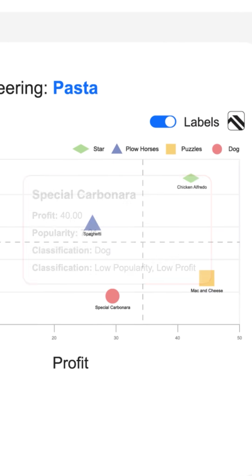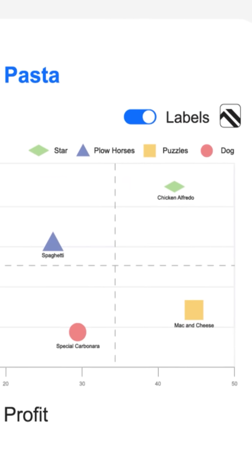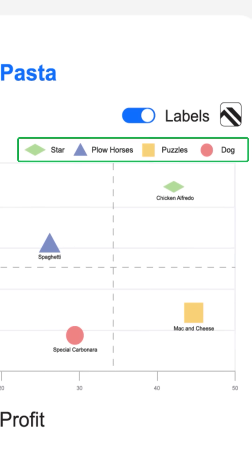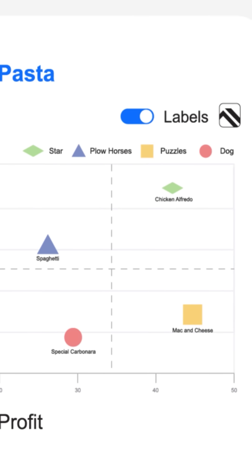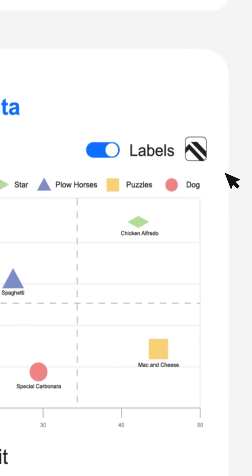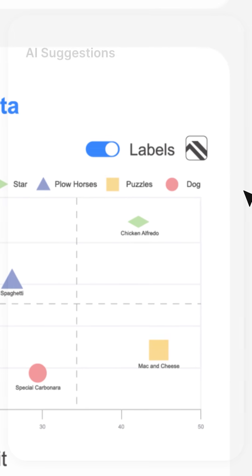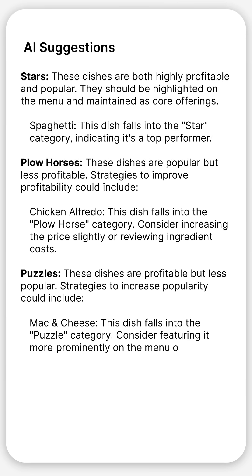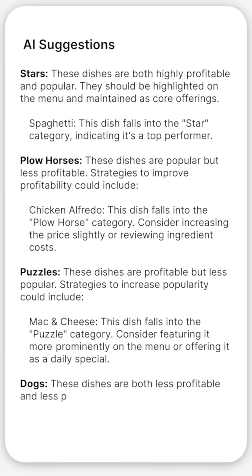View the legends to understand what each label means. Finally, click on the button beside the label's toggle to generate AI-driven suggestions on how you can further optimize your Menu and maximize your profits.